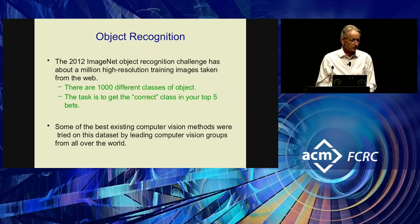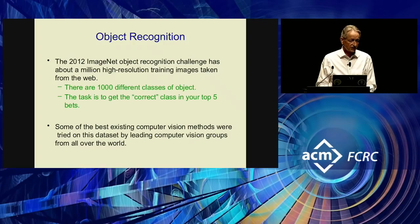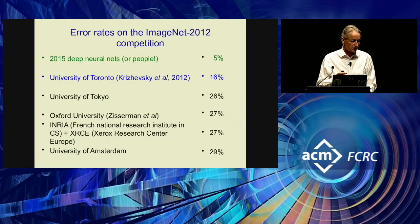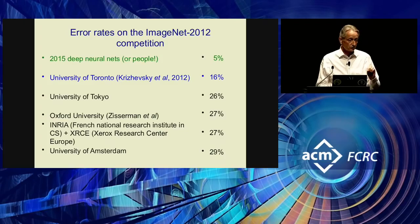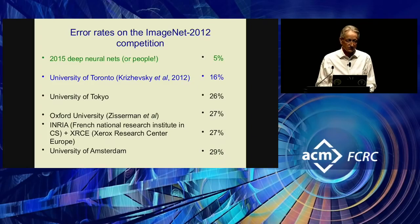Then in 2012, two other of my graduate students applied neural nets to object recognition on a big database that Fei-Fei Li had put together with a thousand different classes of object — finally a big enough database of real images to show what neural nets could do. All the standard computer vision systems had asymptoted at about 25% error. Our system got 16% error, and further work on neural nets brought it down to 5% by 2015 and considerably below that since. Then what happened was exactly what ought to happen in science: leaders of the computer vision community looked at the results and said 'they really do work, we were wrong, we're going to switch' — and within a year, they all switched.